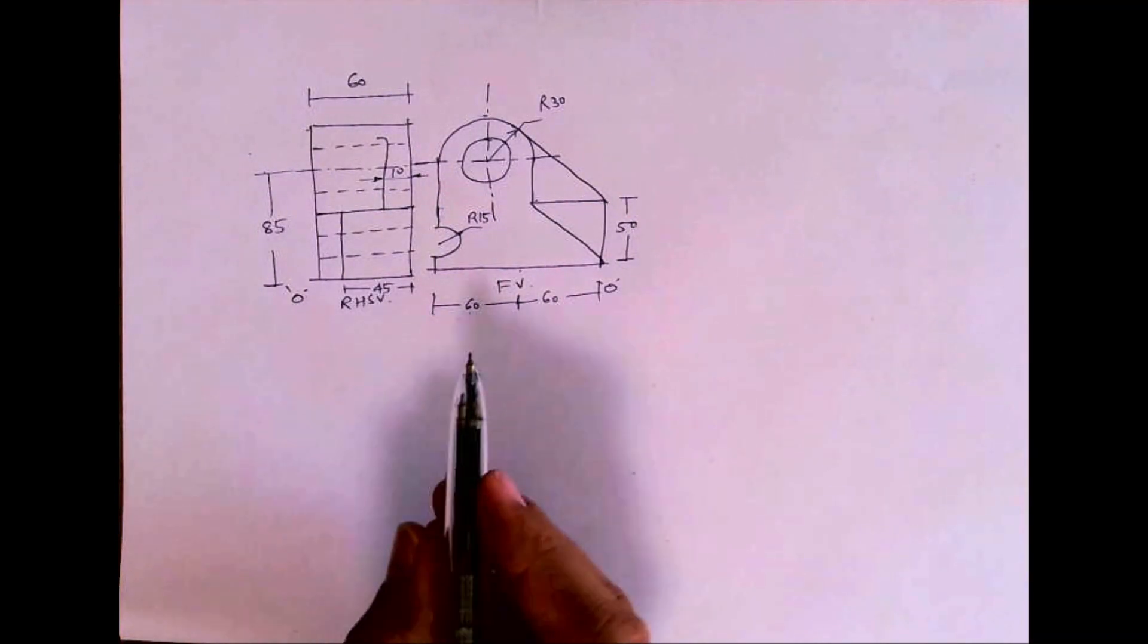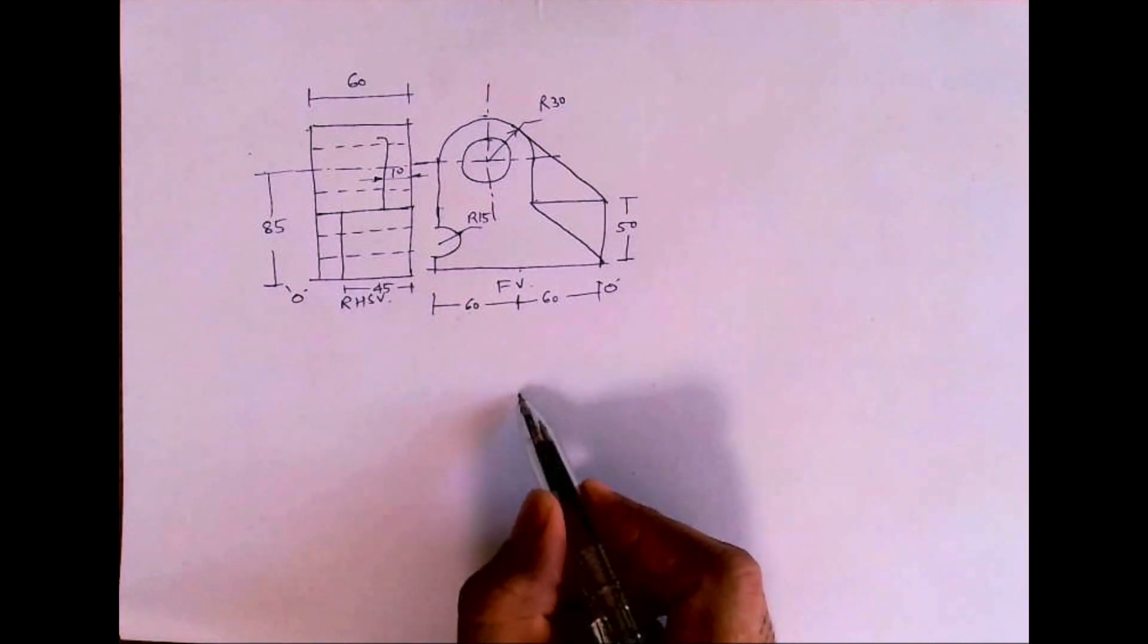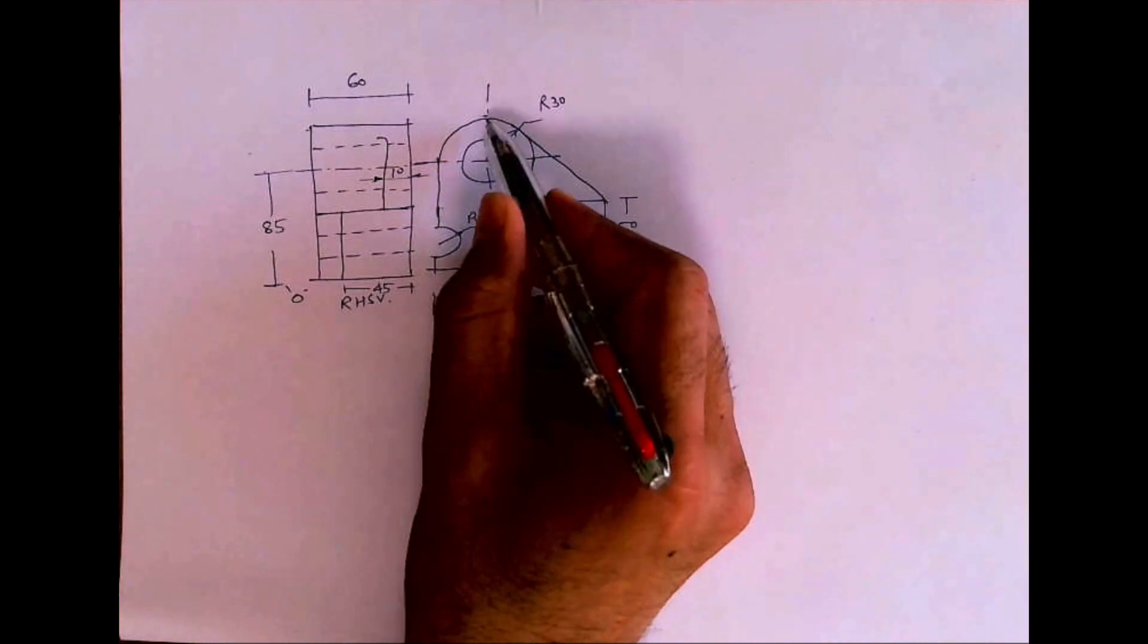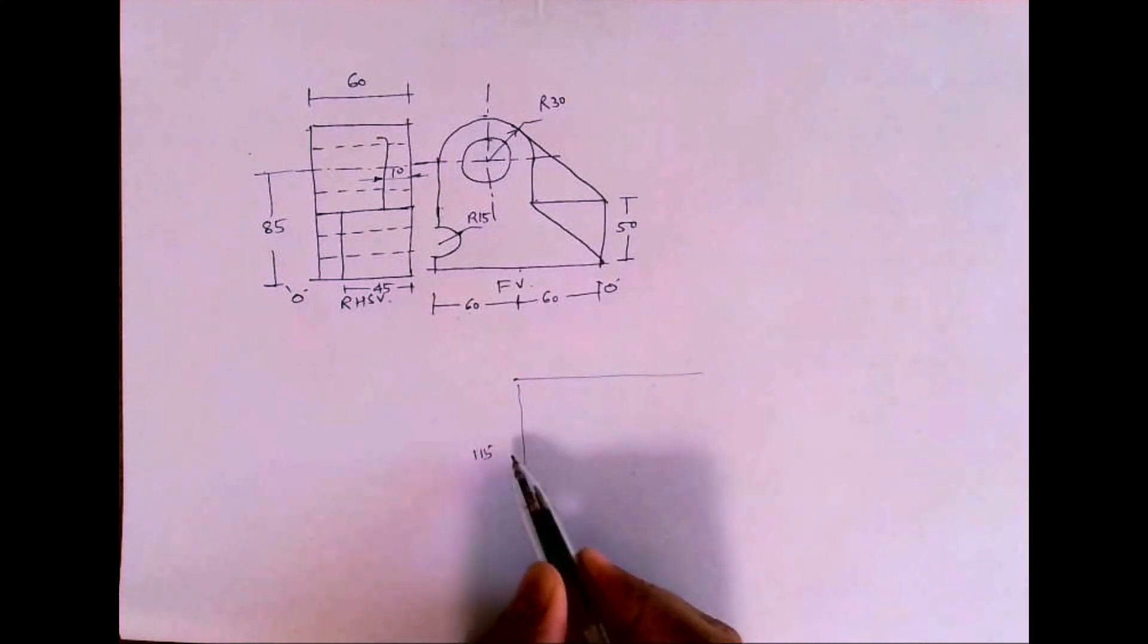Welcome to technical drawing. Today we are going to see this semi-oblique. We have front view, side view. First we will draw the layout. Length is how much and height is how much? Height is 115.